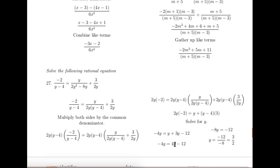Gathering up the like terms on the right hand side, then subtracting minus 4 from both sides, and finally dividing both sides by minus 8 and simplifying.